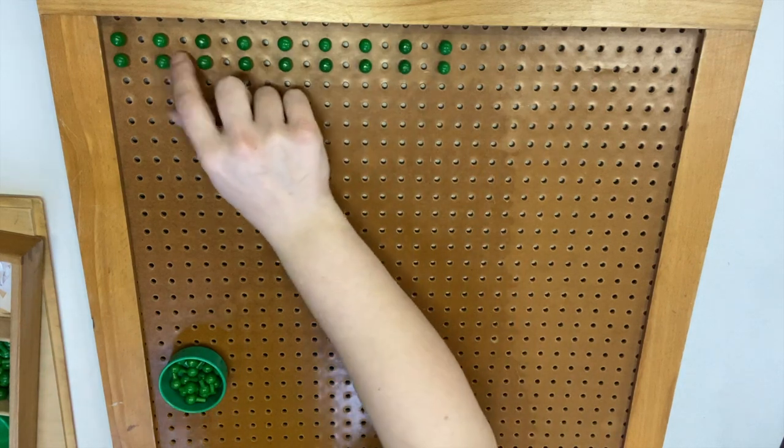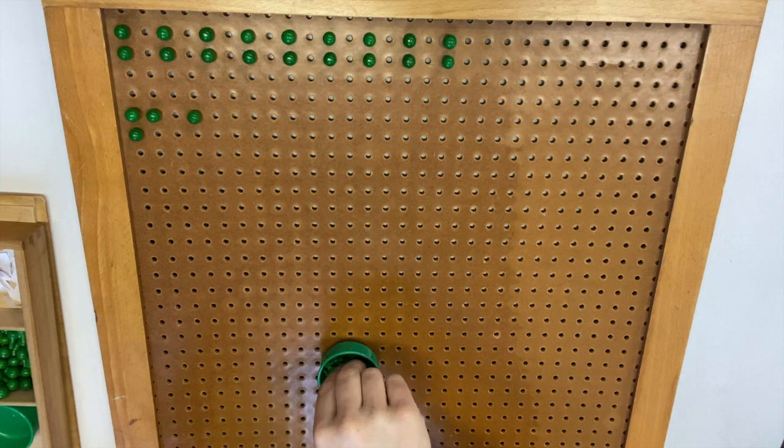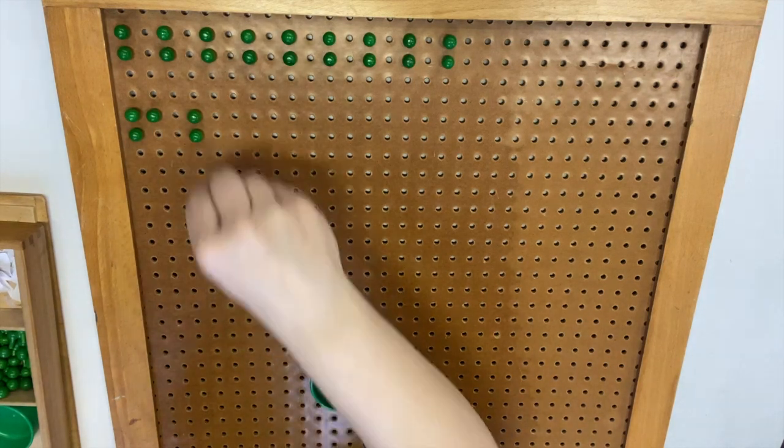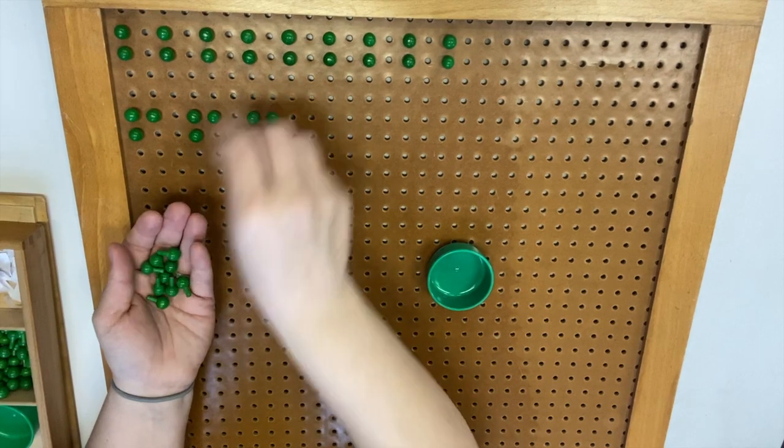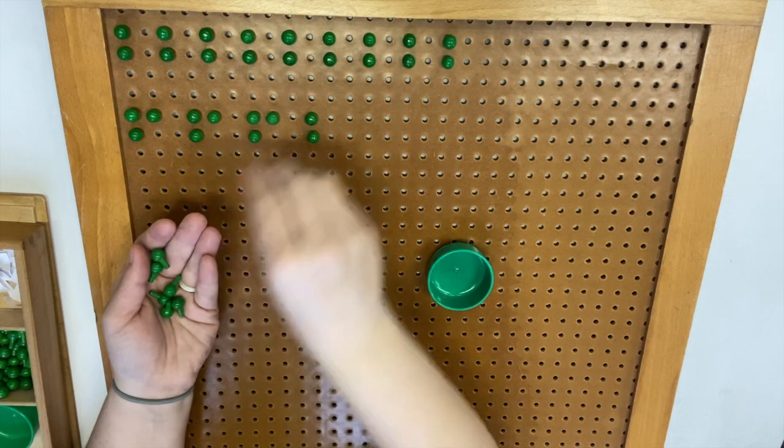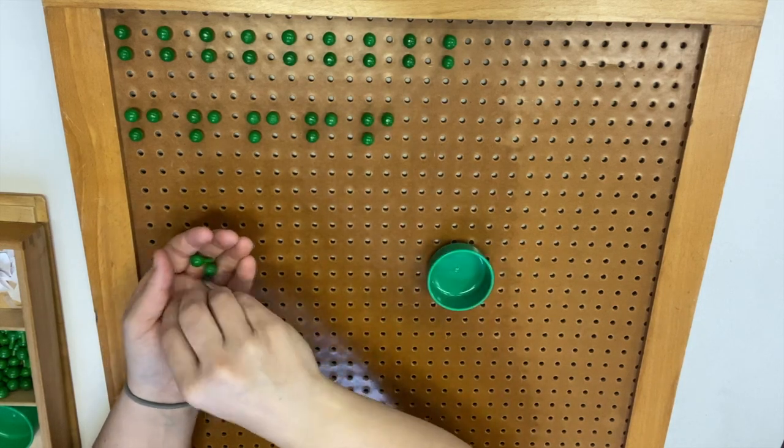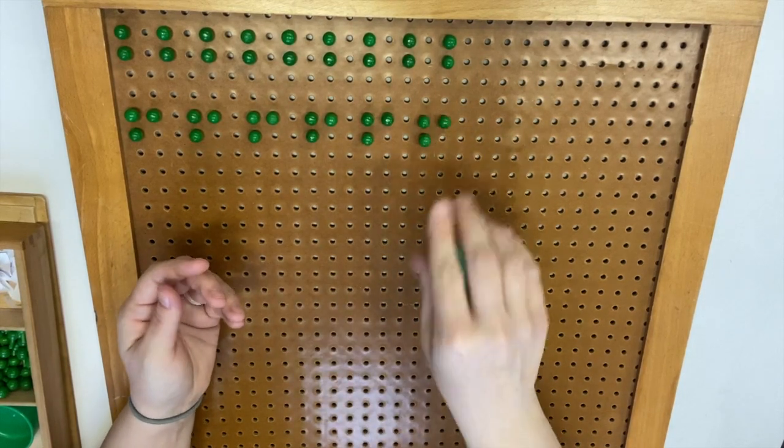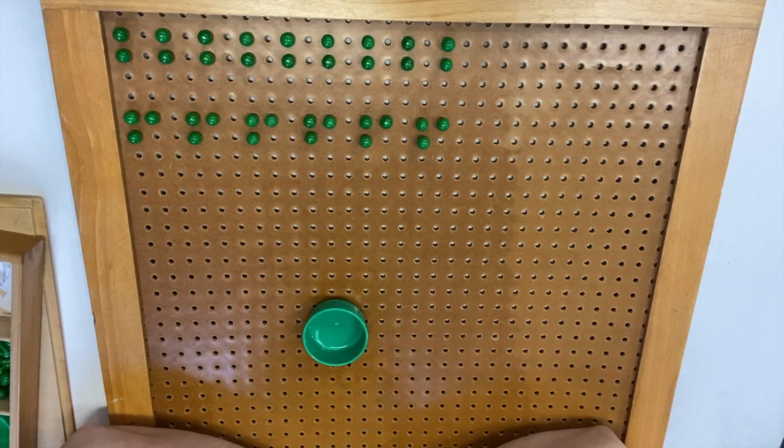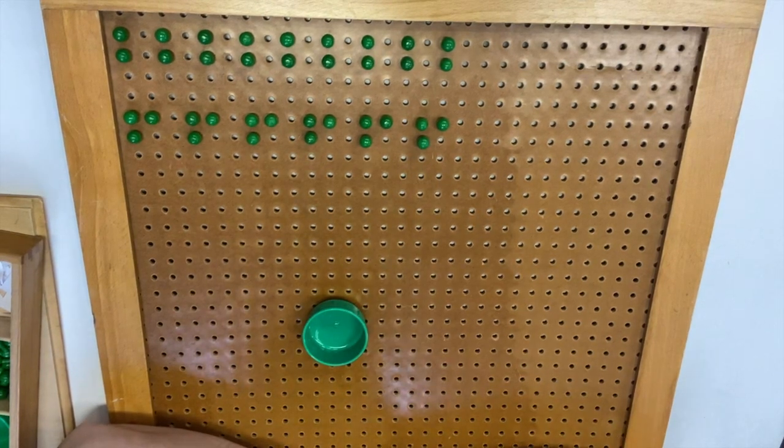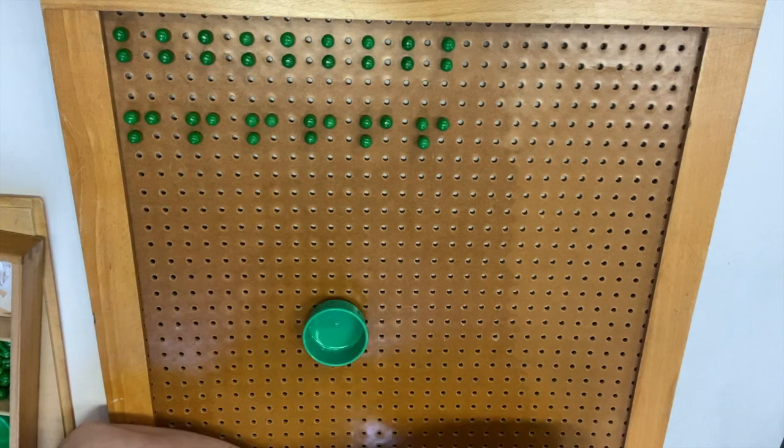Now we're going to make groups of three. Let's see if we can do it. One group of three, two groups of three, three groups of three, four groups of three, five groups of three, and six groups of three. Look at that, we did it! We were able to make equal groups of three, and we have one, two, three, four, five, six equal groups of three. So three is a factor of 18 because we can make 18 using equal groups of three without anything left over.